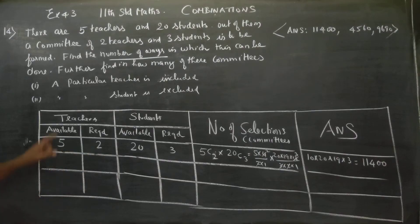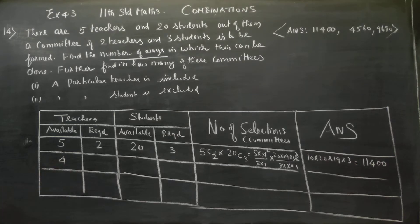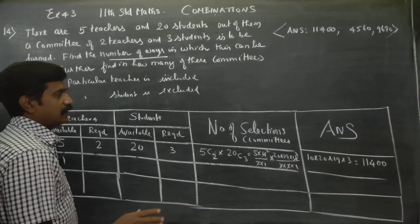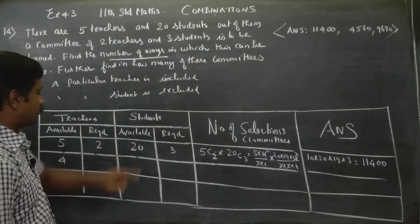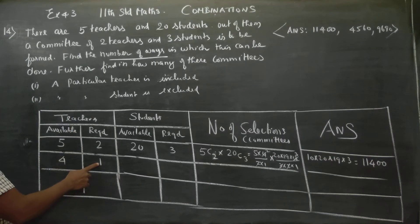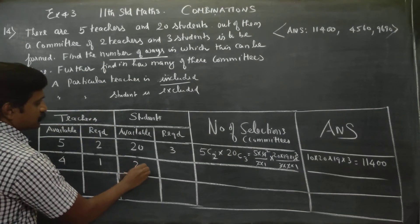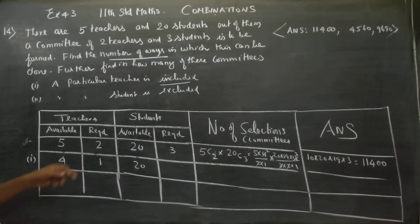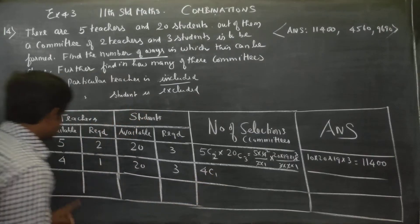This is stage 1. Stage 2: a particular teacher is included — one particular teacher is already selected. So out of the remaining 4 teachers, you have to select 1.